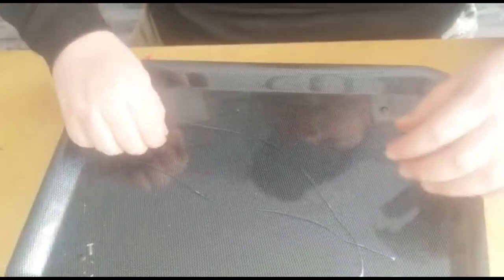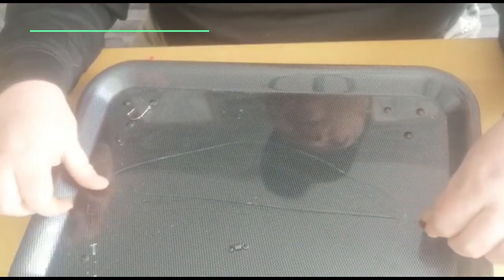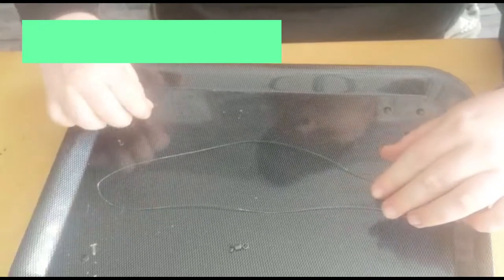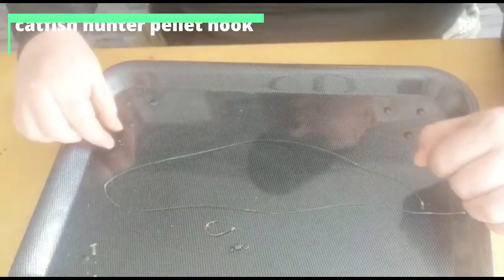So what you want, guys, is a nice 150 pound swivel, some nice tough abrasion-resistant hook link, and a nice big pellet hook. You can get these from UK Angling, barbed or barbless.